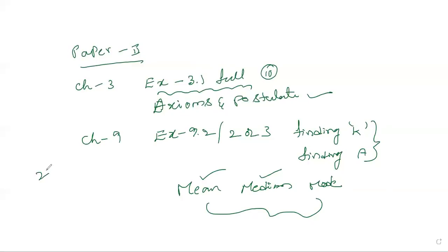2 marks is guaranteed. And here's a question — minimum 1 mark, here 2 marks is guaranteed. So if you want to find out, we have to find out lines and angles.